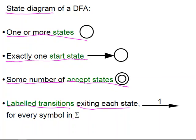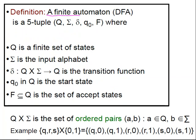These are the features that we want to capture with the definition. And here is our definition. A finite automaton, DFA, is a 5-tuple: Q, Σ, δ, q0, F.